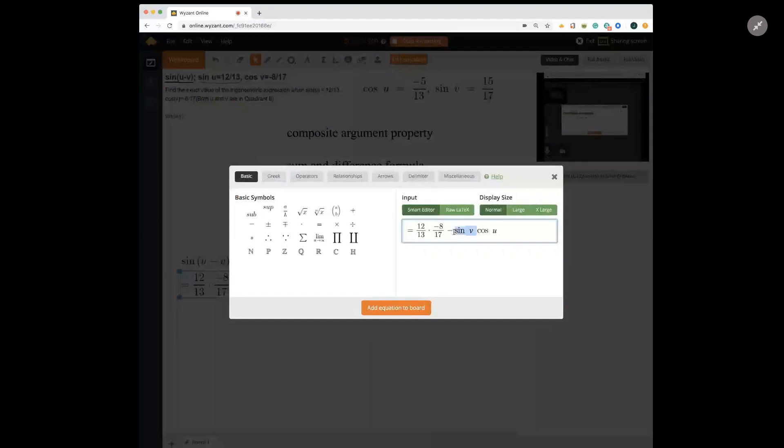So the sine of v, I claim, is 15 over 17. And the cosine of u, I claim, is negative 5 over 13. Oops. There we go.